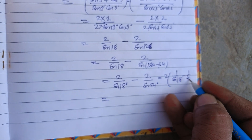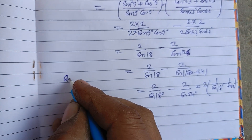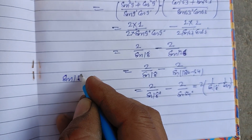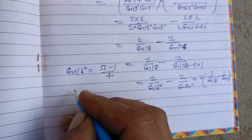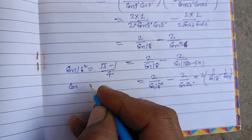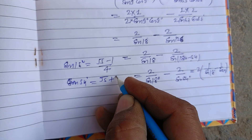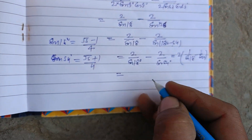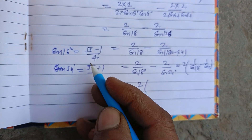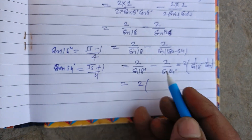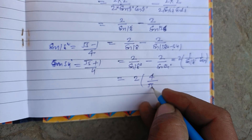Using the known values: sin18° = (√5−1)/4 and sin54° = (√5+1)/4, and substituting these, their reciprocals become 4/(√5−1) and 4/(√5+1) respectively.